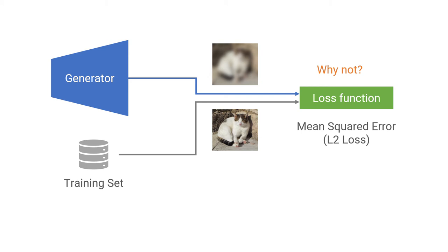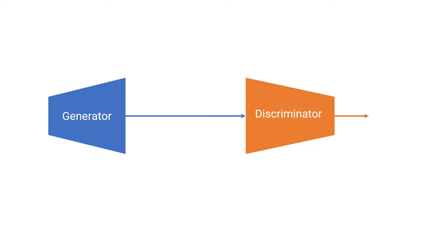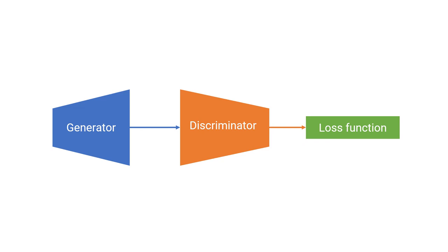One interesting thing about adversarial training is that the model is forced to work harder where it's failing. The discriminator constantly looks for the weaknesses of the generator to catch whether it's a fake sample. And the generator is forced to address those weaknesses. Once those weaknesses are addressed, the discriminator tries to find other weaknesses and so on.